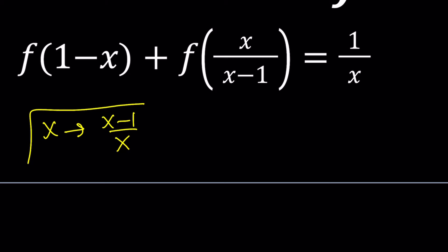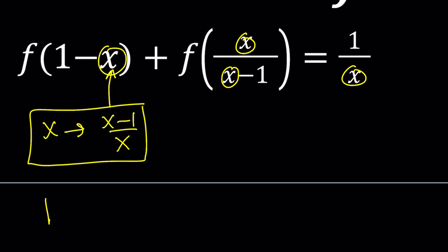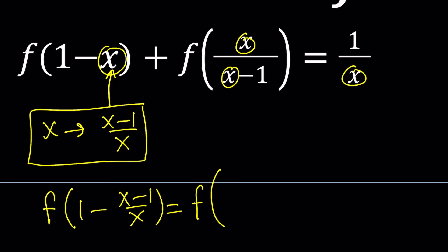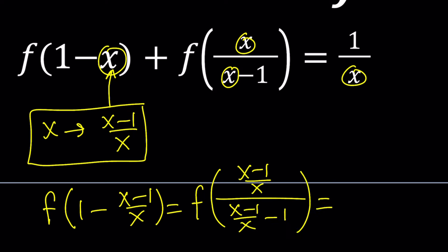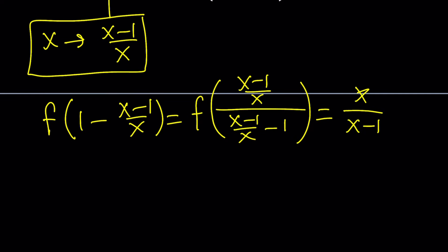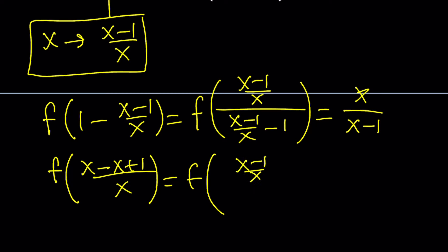Replacing x with x minus 1 over x — I'm not saying x equals x minus 1 over x, meaning you have to do it everywhere, replacing all these x's with x minus 1 over x. So we're going to get f of 1 minus x minus 1 over x, plus f of x minus 1 over x divided by x minus 1, equals the reciprocal which is x over x minus 1. Here we make a common denominator and get x minus x plus 1 over x. These x's will cancel out.